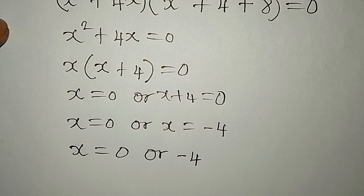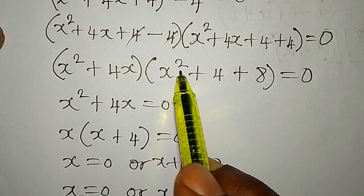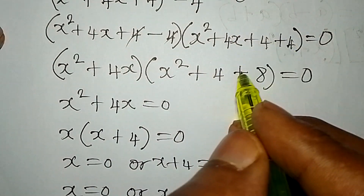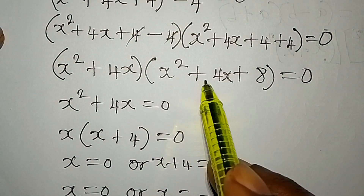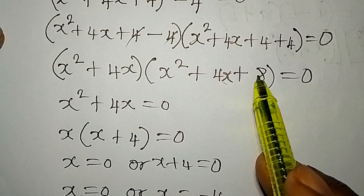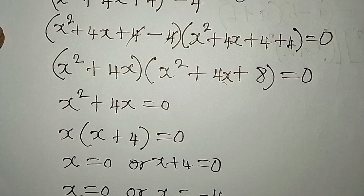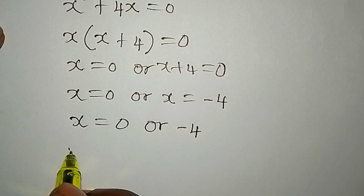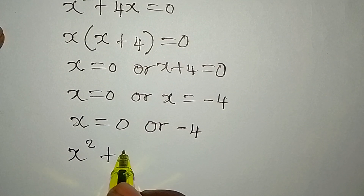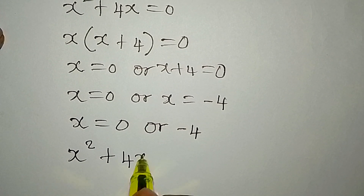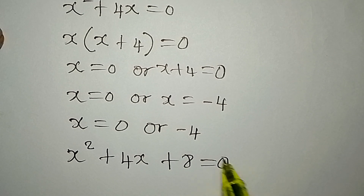Now for the second part: x squared plus 4x plus 8 equals zero.